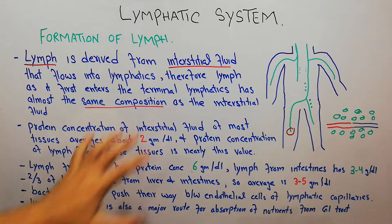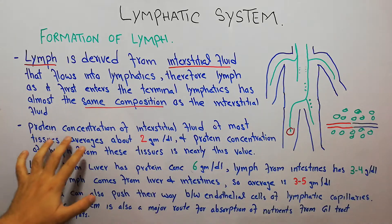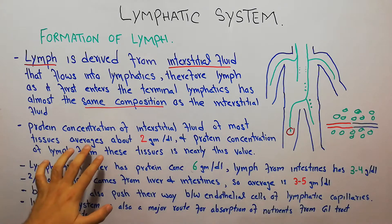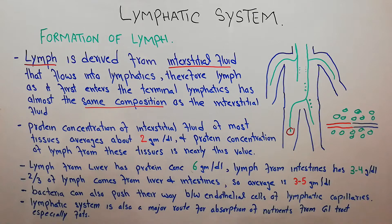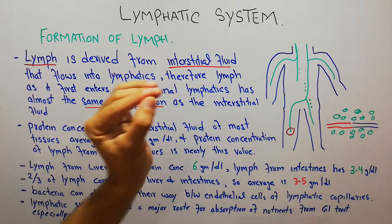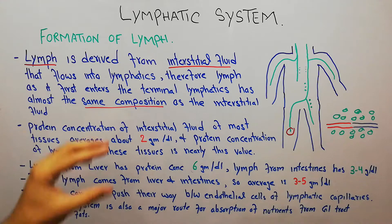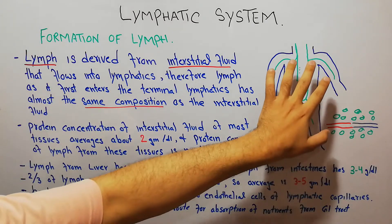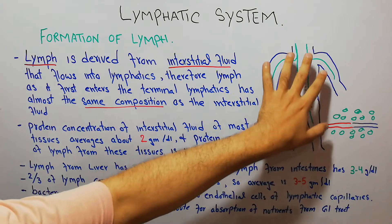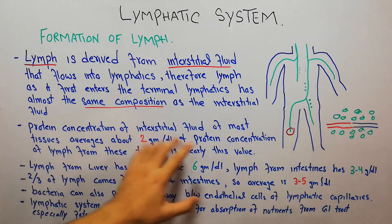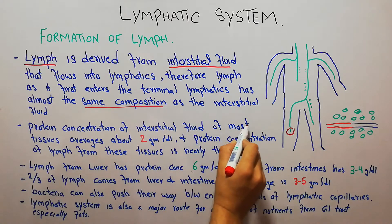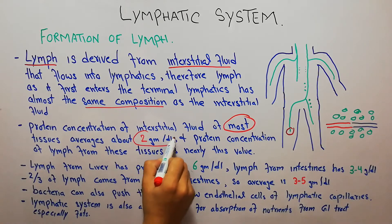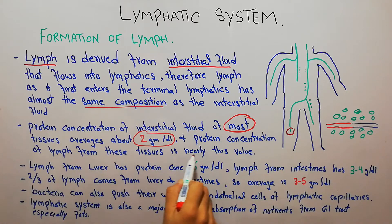Initially the composition is like interstitial fluid, but the protein concentration of interstitial fluid in most tissues averages about 2 grams per deciliter, and the protein concentration of lymph from these tissues is nearly this same value. So the dominant component of lymph will be proteins.